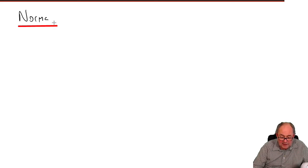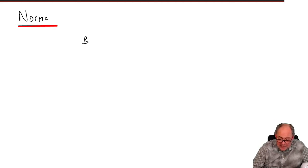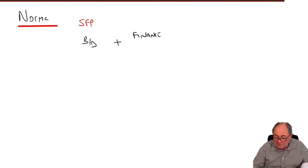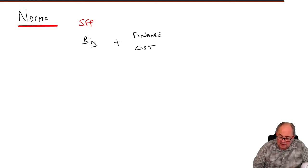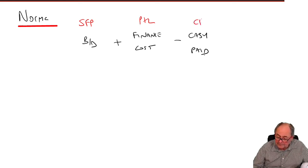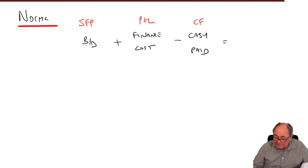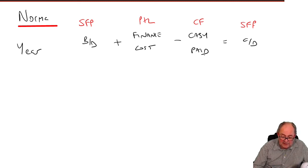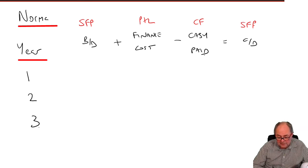So here we come to accounting for Norma. Nice big working. Four column working. Brought down at the start. That's the figure that would be in the opening statement of financial position. Add on the finance cost. That's the figure that will be in the profit and loss. Deduct any cash that's paid. That's the figure that would go in the cash flow. And that would give us the carried down figure, in the closing statement of financial position. We're looking at four years. So down the side, I'll just write year 1, 2, 3, and 4.